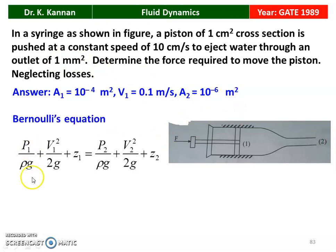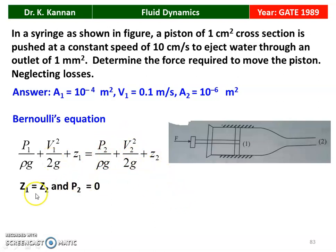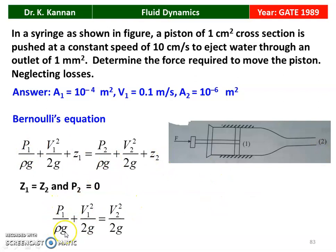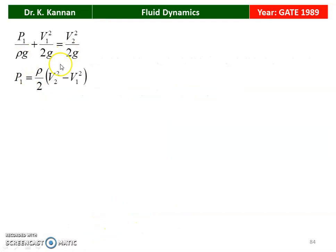Using Bernoulli's equation: P1/ρg + V1²/2g + Z1 = P2/ρg + V2²/2g + Z2. Since Z1 equals Z2, and P2 equals 0 (atmospheric pressure at section 2), substituting gives: P1/ρg + V1²/2g = V2²/2g. Therefore, P1 = (ρ/2)(V2² − V1²).